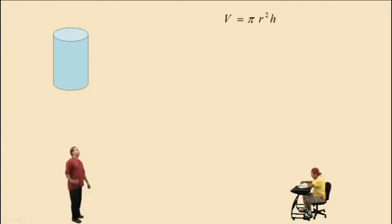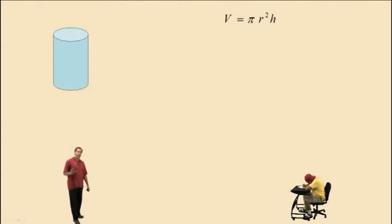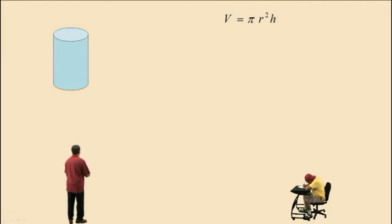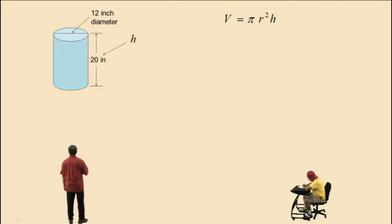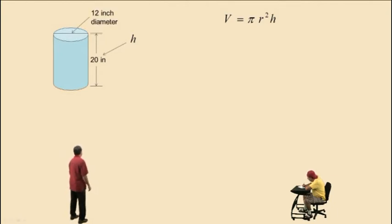Here's our cylinder. The formula for the volume of a cylinder is pi r squared h. Remember, volume is 3 dimensions. Notice here our height is 20 inches, and the diameter of the circle on top of this cylinder is 12 inches.